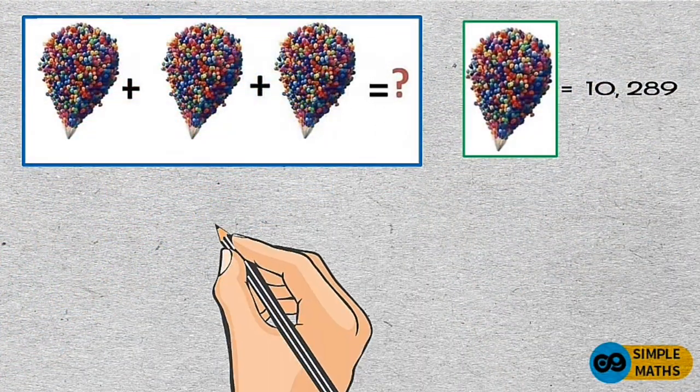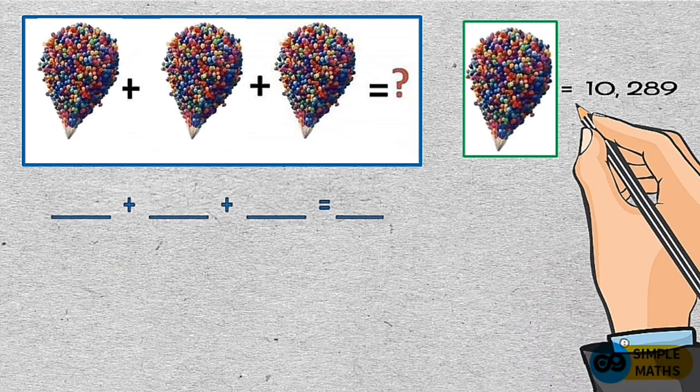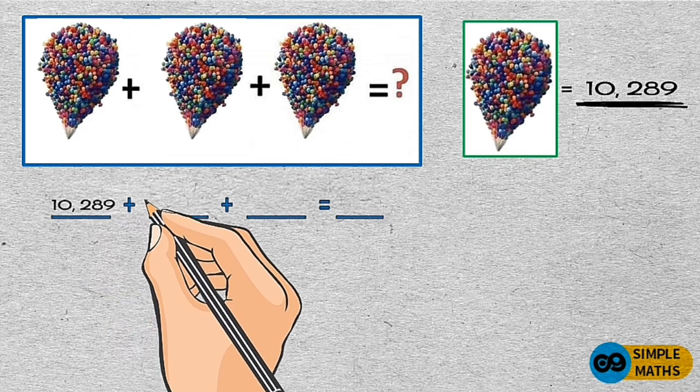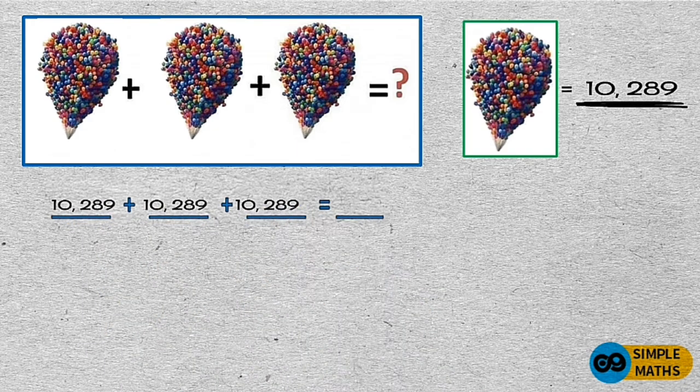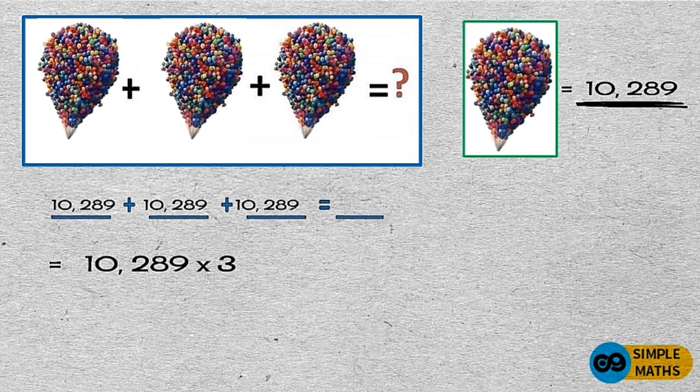All right, we now have the value of this image, which is 10,289, and all we have to do is to add the value of these images, or we can just multiply 10,289 by 3, which is equal to 30,867.